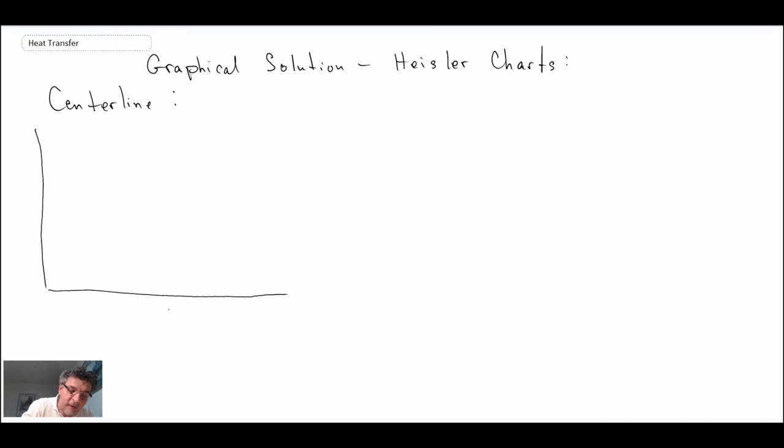Just like before, we also have the Heisler charts that we can use, and so that's the graphical solution. We're starting with the centerline temperature. We have this plotted as a function of the Fourier number—that's going to be theta naught divided by theta i. And here we're going to have these curves, and they are functions of one over the Biot number.